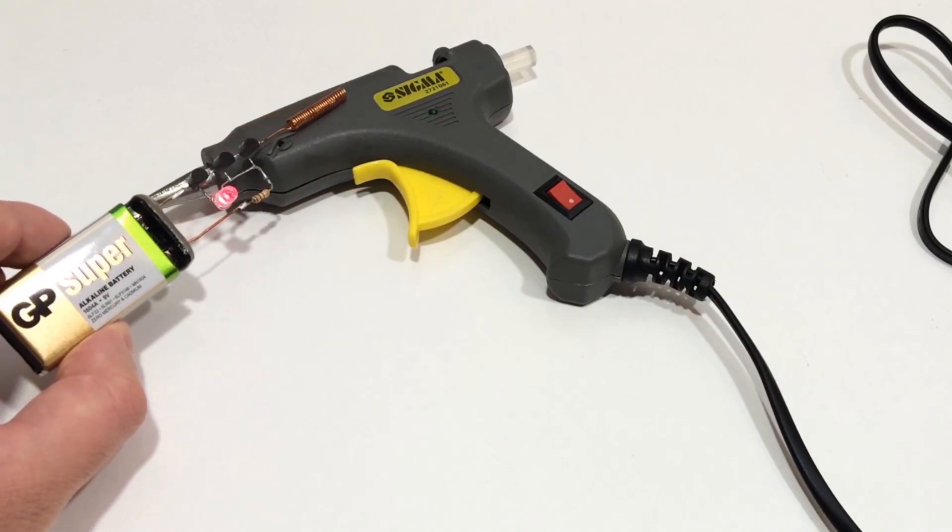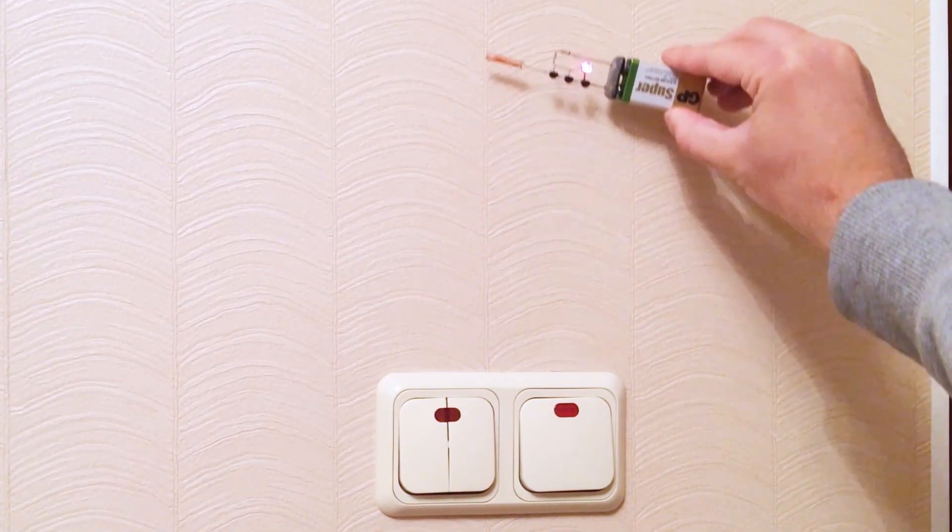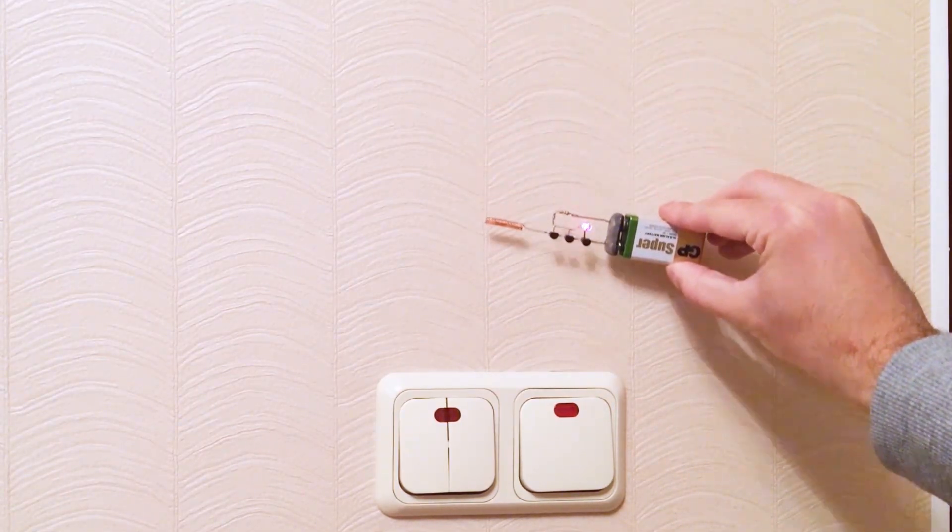When you bring the device near metal, the magnetic properties of the antenna change, causing the circuit to react as well. That means the detector works for both live wiring and hidden metal.